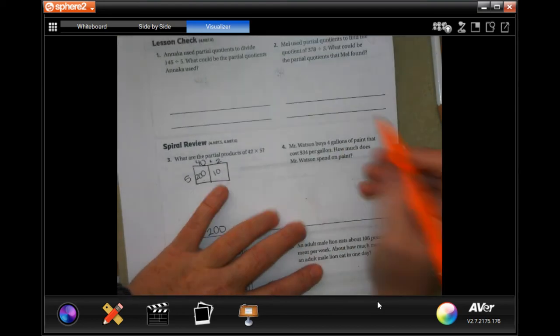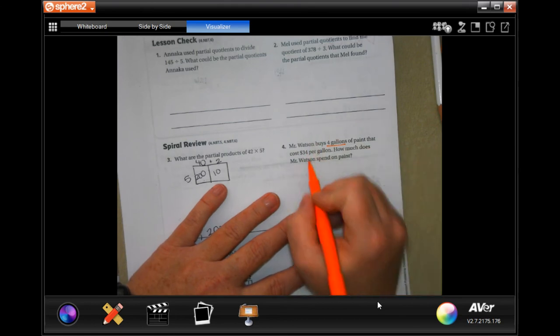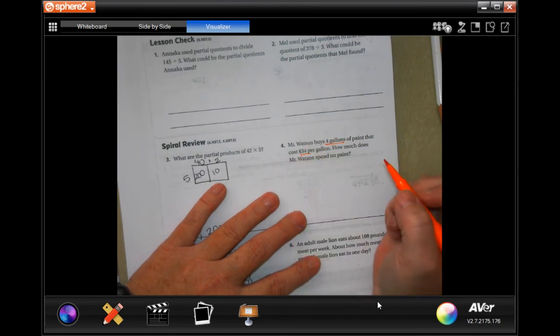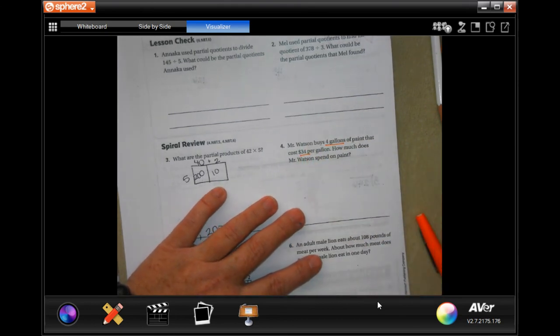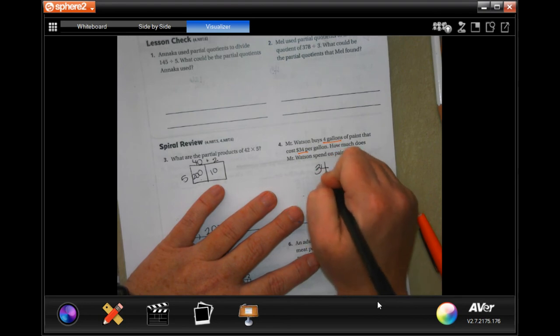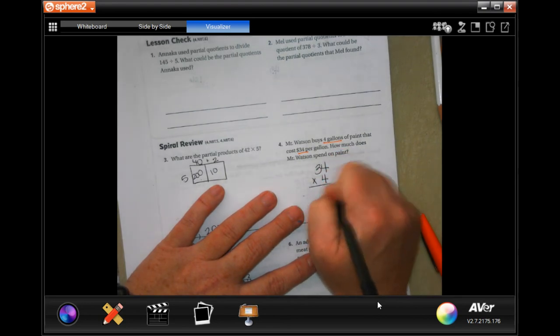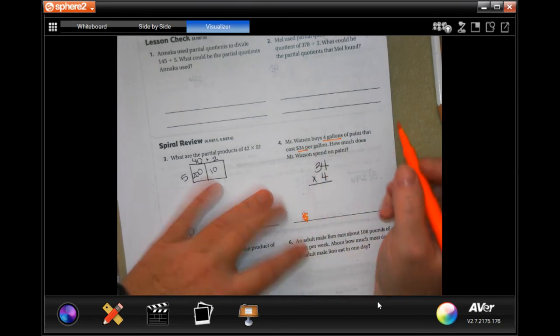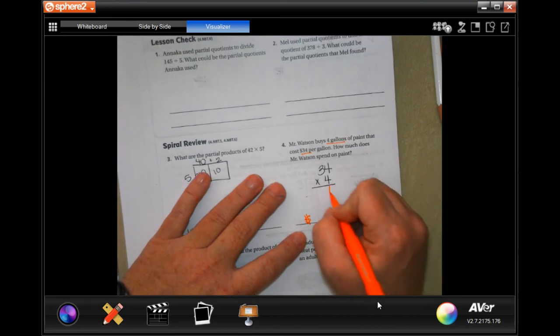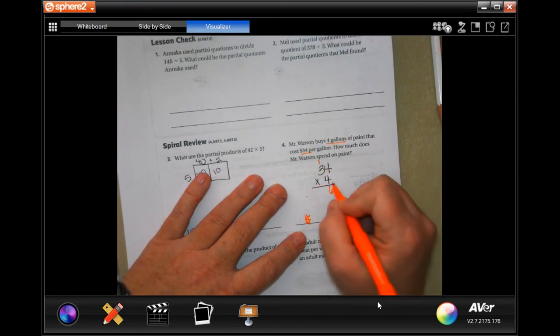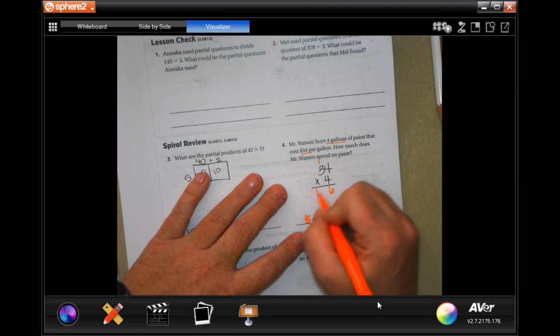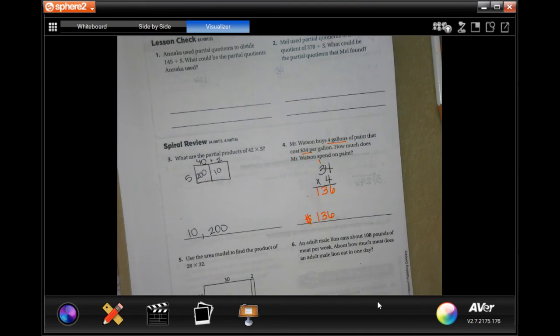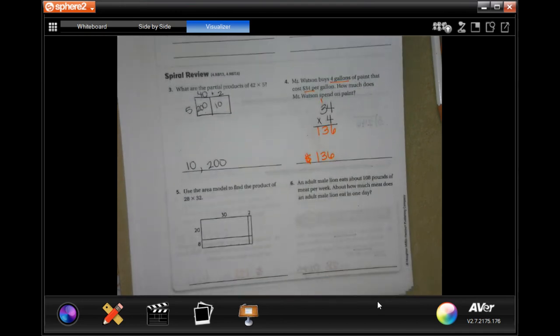Mr. Watson buys 4 gallons of paint at $34 per gallon. How much does he spend on paint? Well, 34 times 4. Whatever it is is going to be in dollars. So 4 times 4 is 16, carry that 1. Four times 3 is 12, plus 1 more is 13. $136.